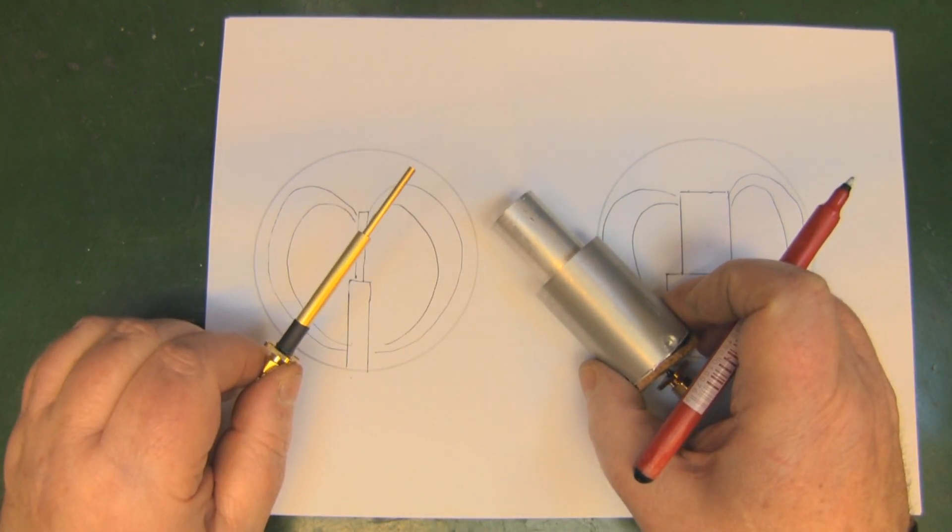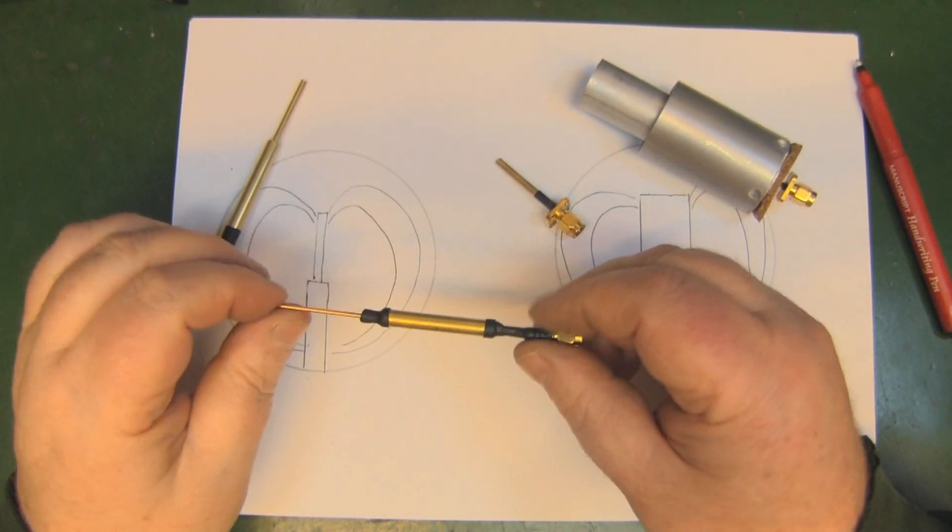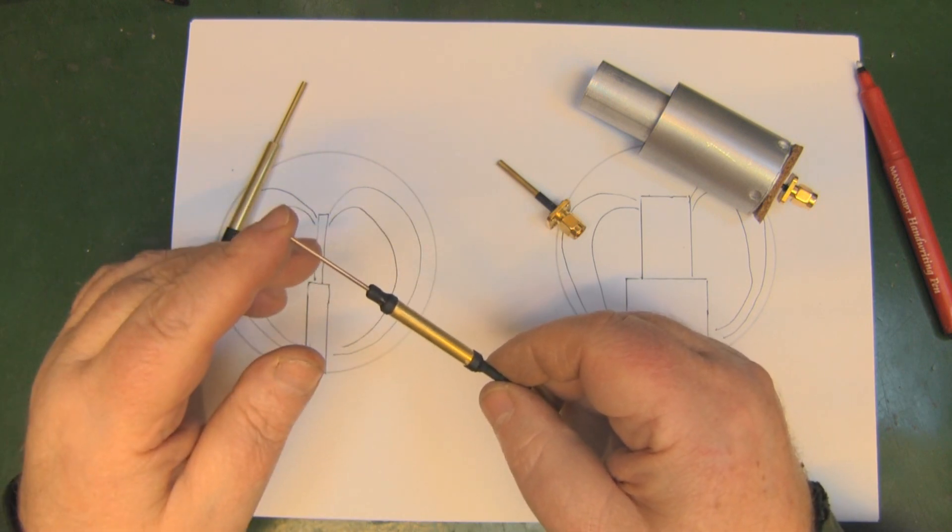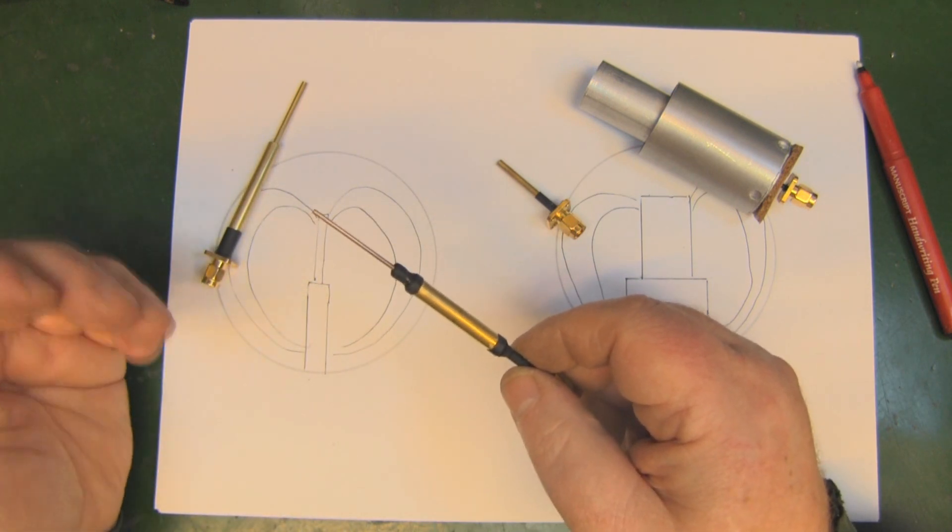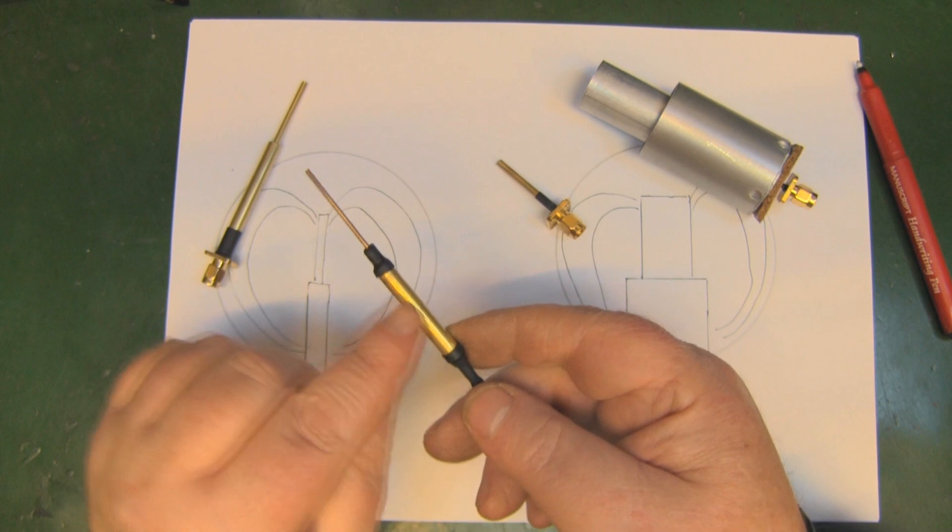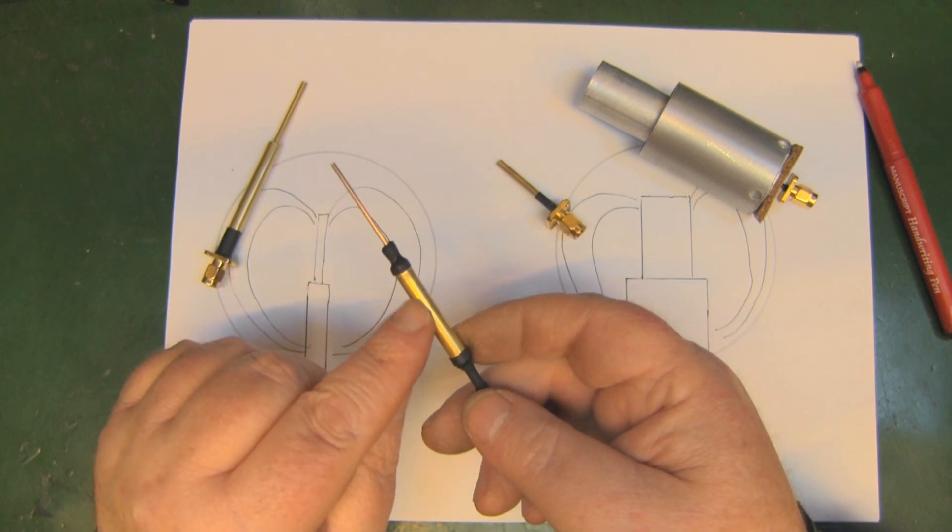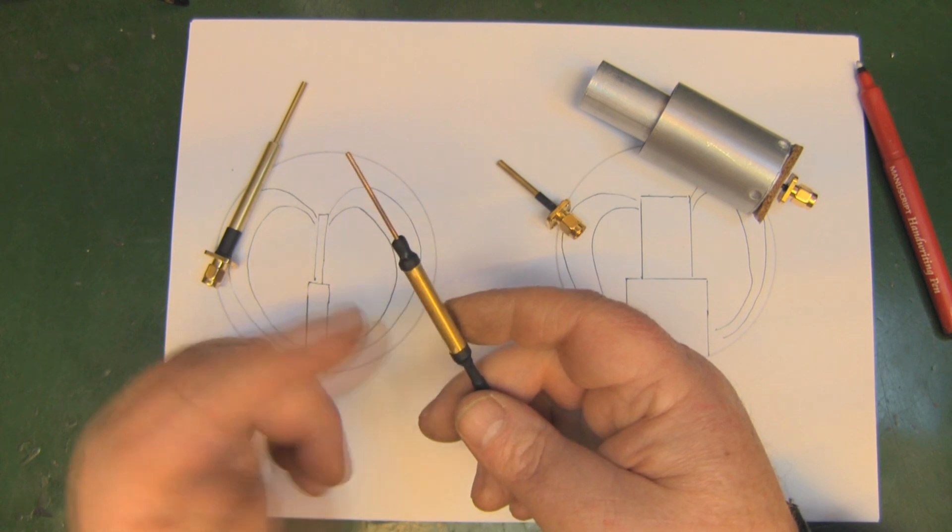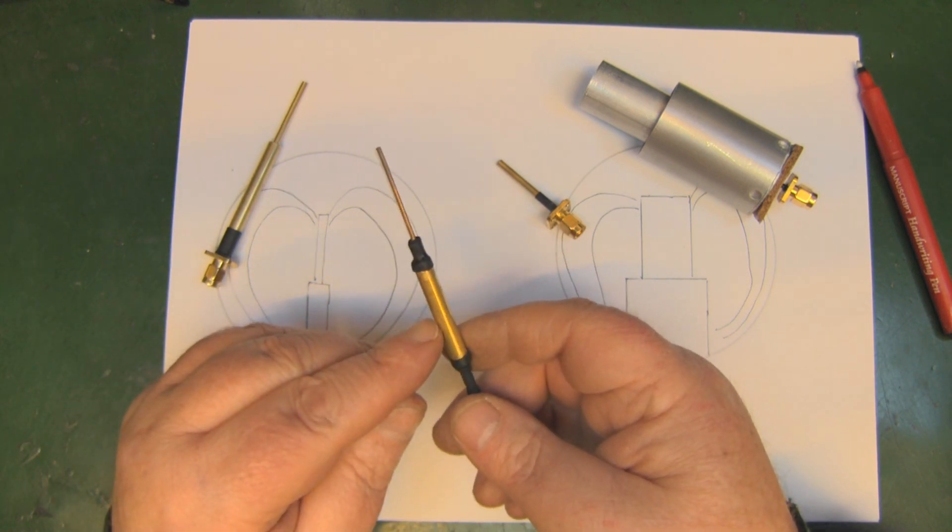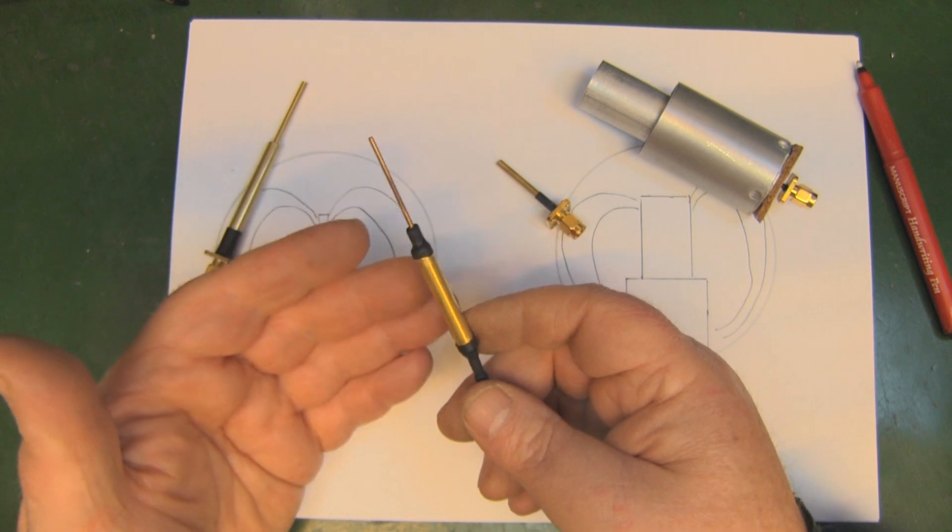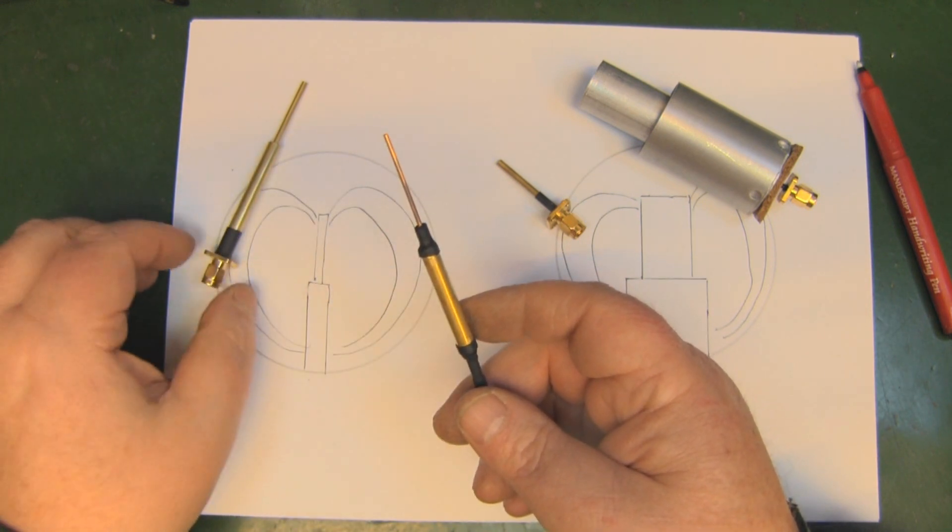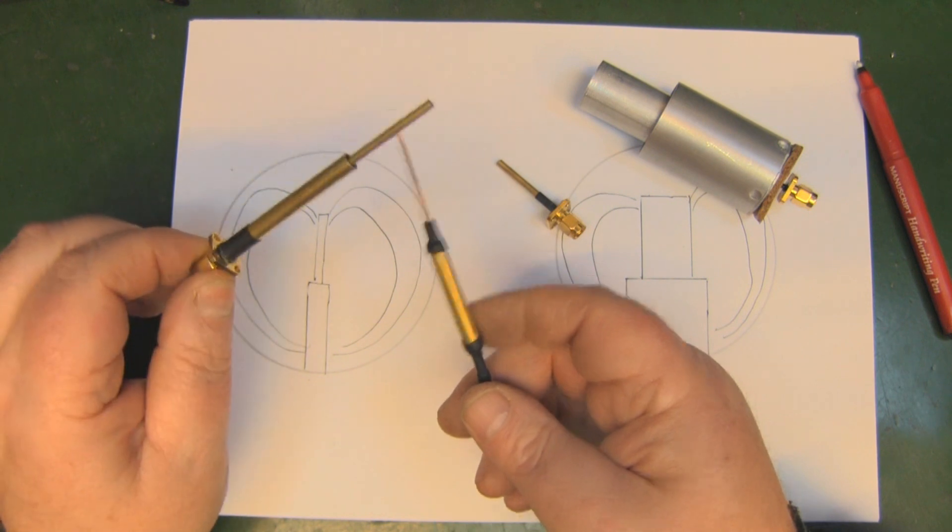You may be asking why don't I use these little Hertzian dipole antennas. This part of the dipole has to be a set measurement, 25 millimeters for 2.4 gigahertz. A waveguide needs to be grounded to work properly.